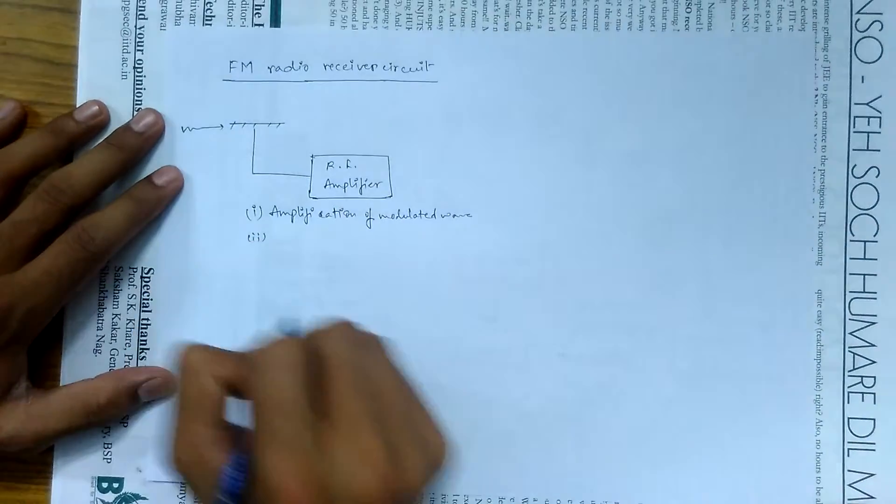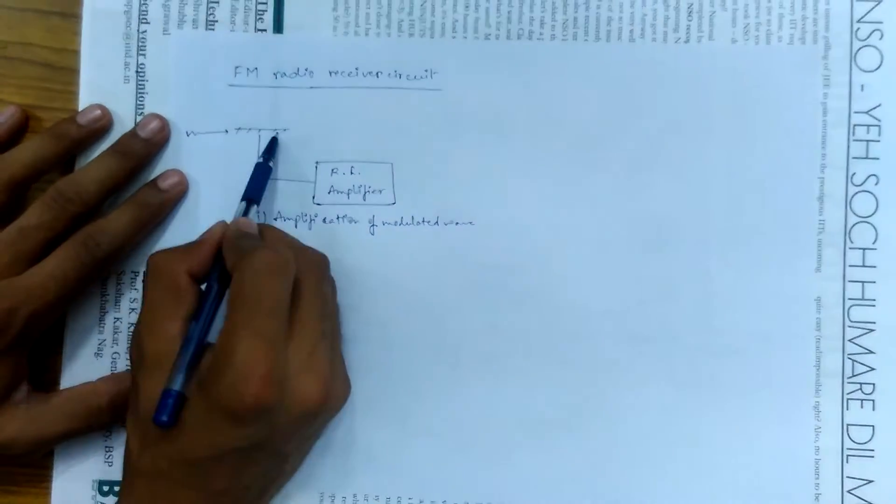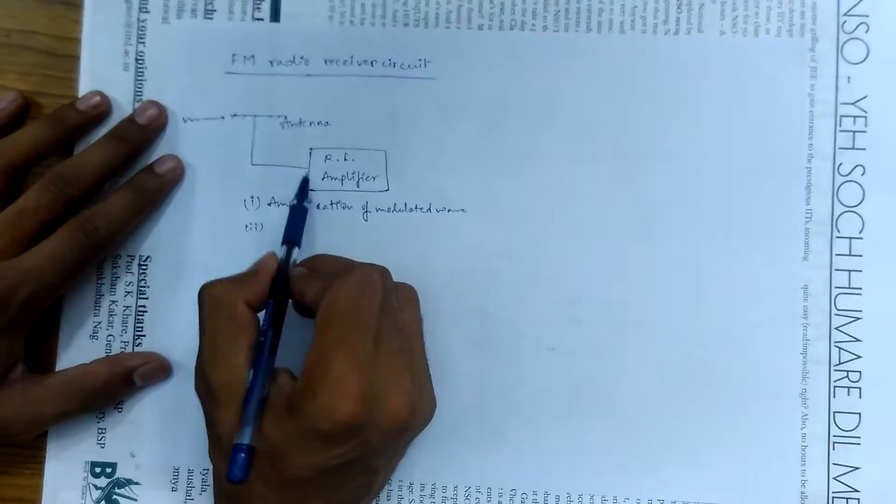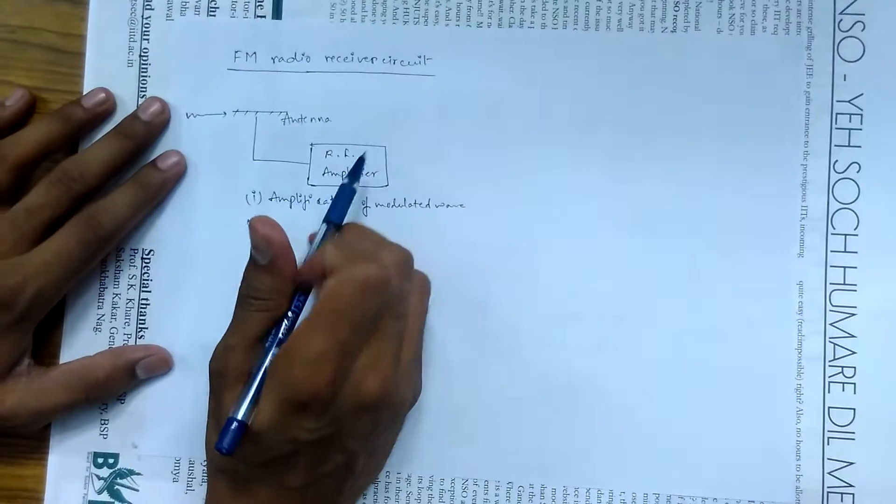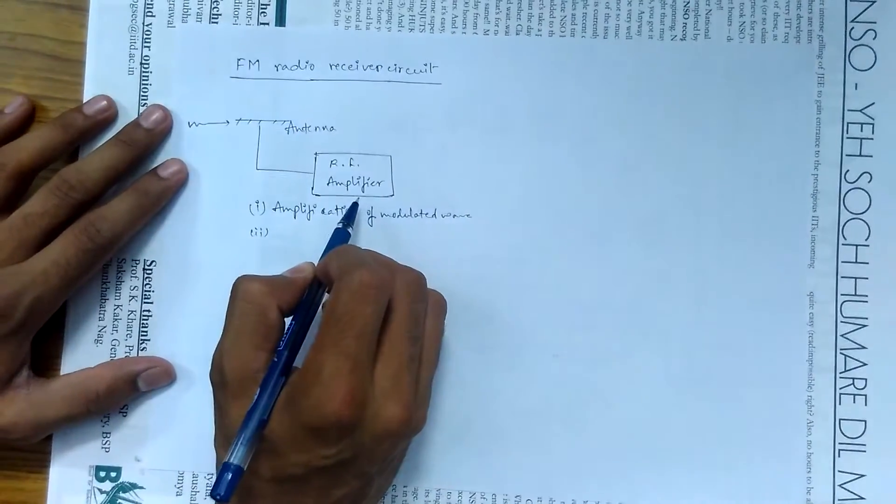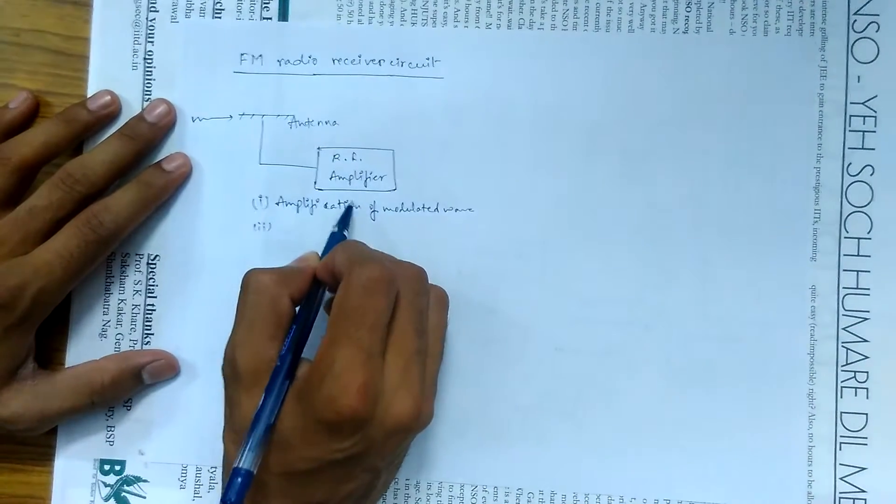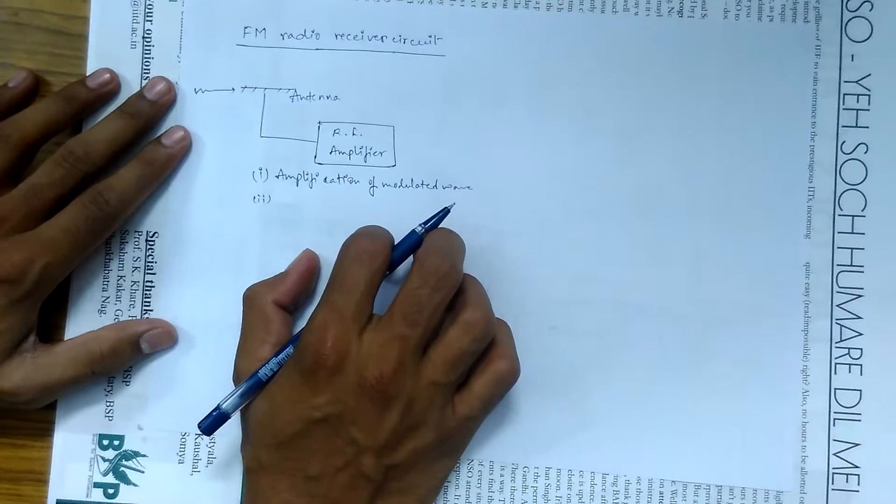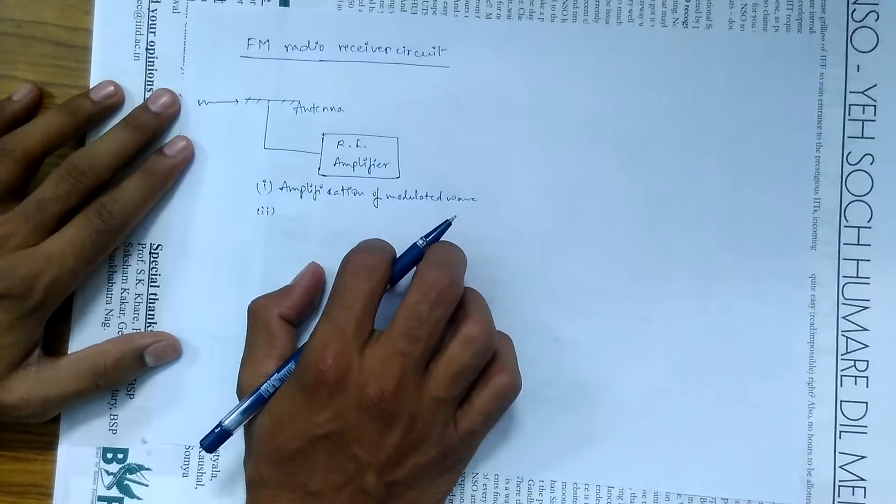And a question arises: how does the antenna know which wave to receive? It may receive a wave of frequency 100 kHz, or it may also receive a wave of frequency 200 kHz. But if we need a frequency of 83 MHz, then how will we tune it to that?